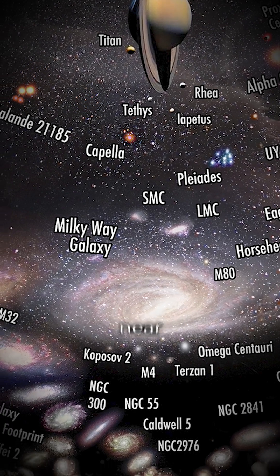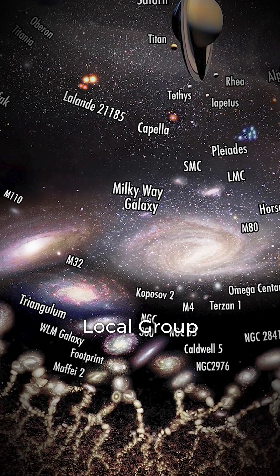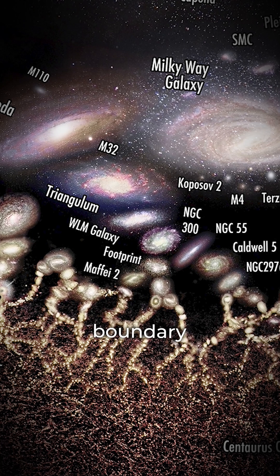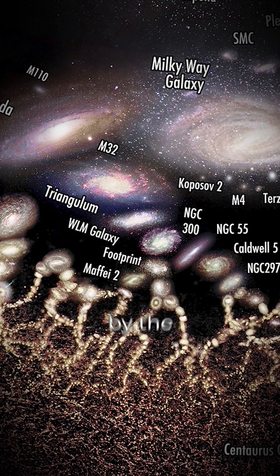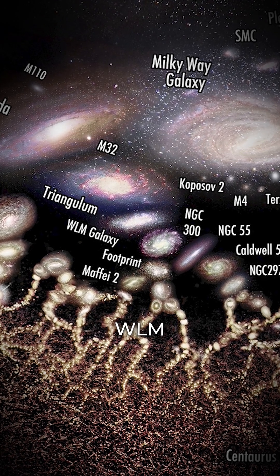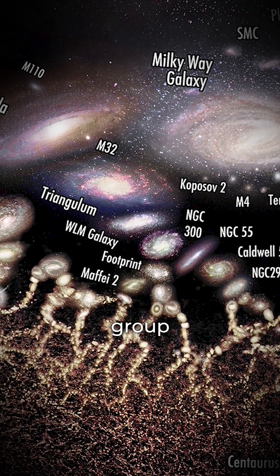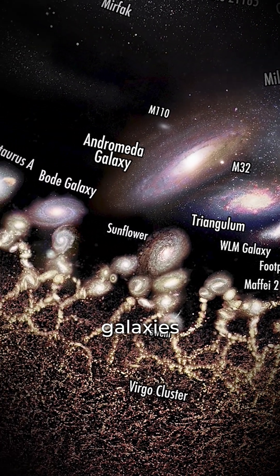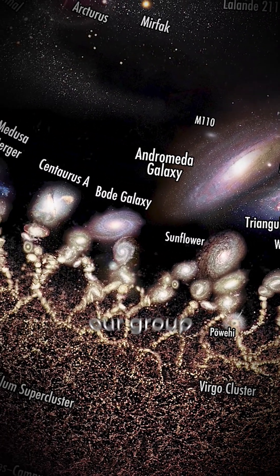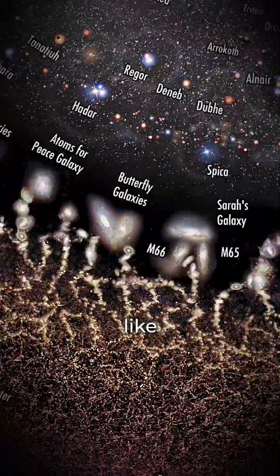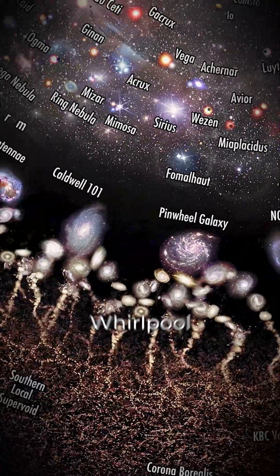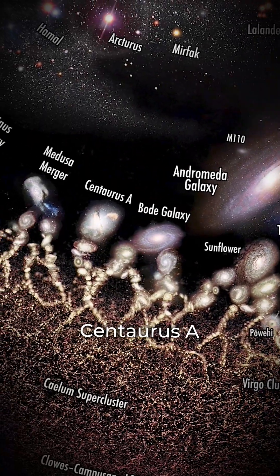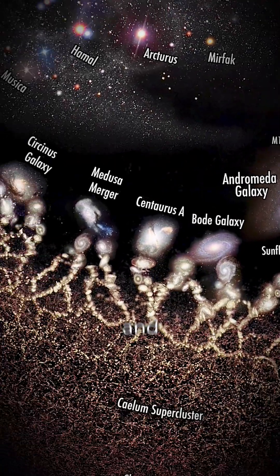It is situated near the other major spirals of the local group, Andromeda and Triangulum. Our group's boundary is delineated by the irregular galaxy WLM, and our neighboring galaxy group MAFE. The Council of Giants is a big roundup of galaxies encircling our group, with spiral giants like Sculptor, Pinwheel, Whirlpool, Black Eye, MAFE II, Bode, Centaurus A, and Circinus.